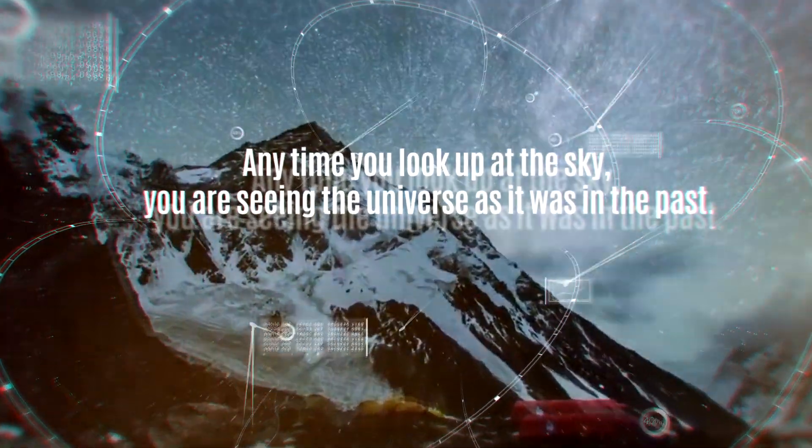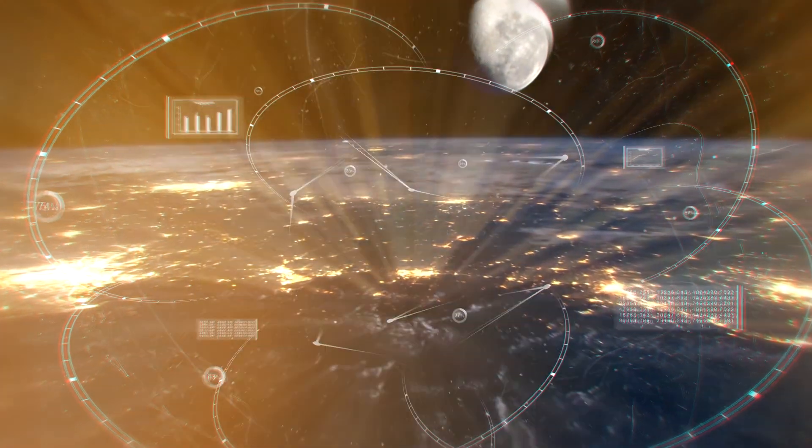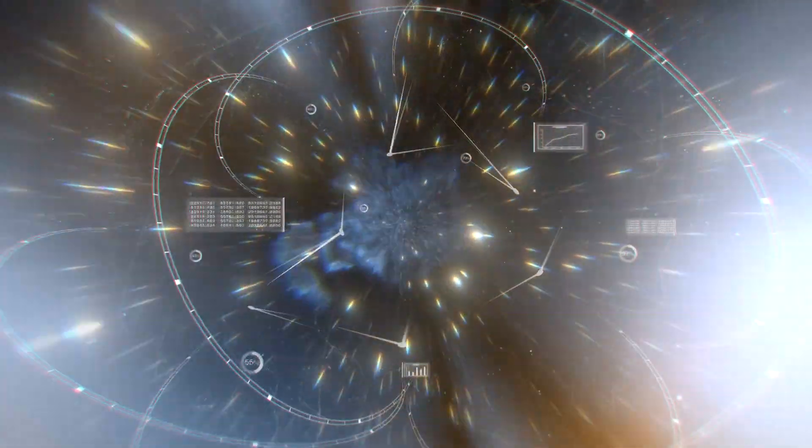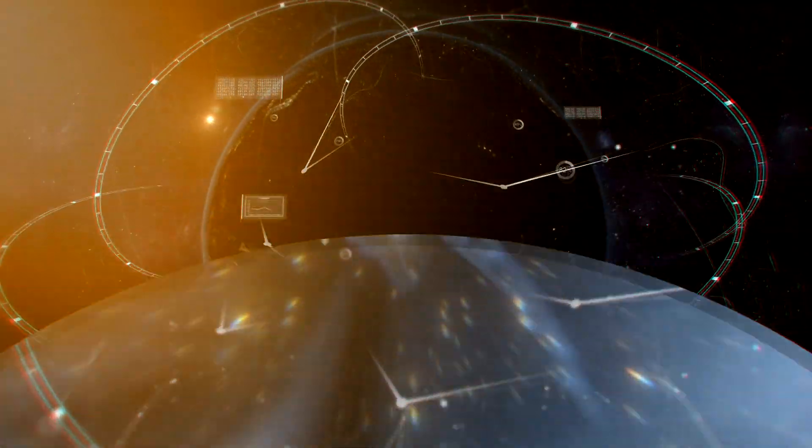Anytime you look up at the sky, you're seeing the universe as it was in the past. If we look at an object 50 million light years away, we're seeing what the object looked like 50 million years ago, because that's how long it took the light to travel from the object to our eyes.